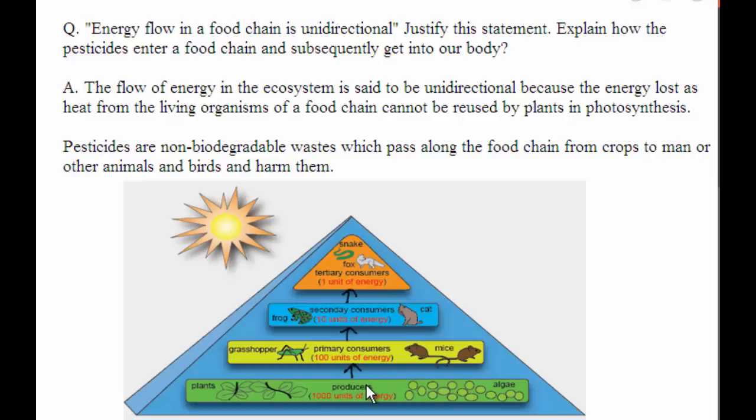producers that are green plants or algae have produced a thousand units of energy, but when it reaches the primary consumers, only a hundred units of energy is passed. The remaining energy has been lost in the form of heat, which cannot be reverted back or reused by these plants in photosynthesis.